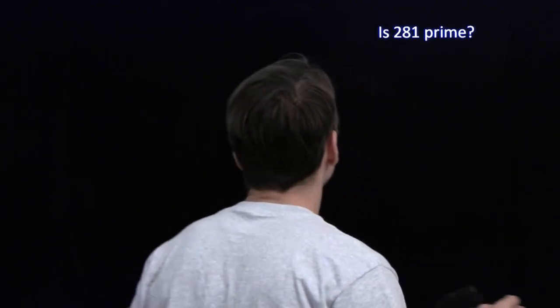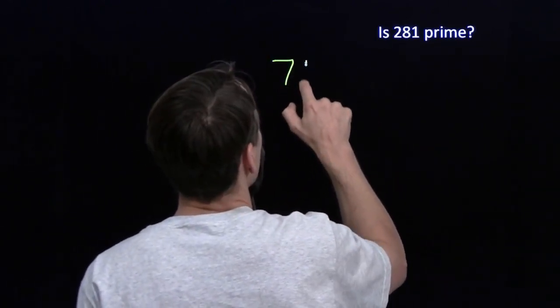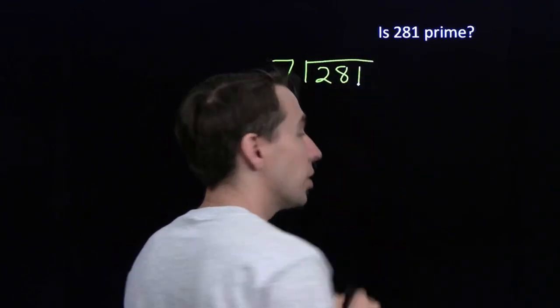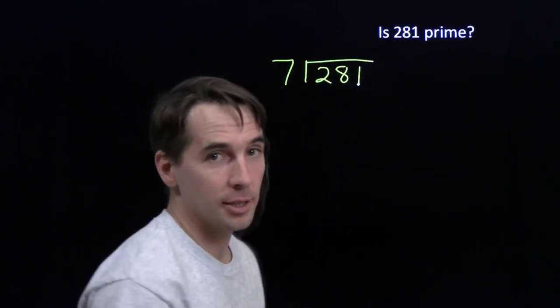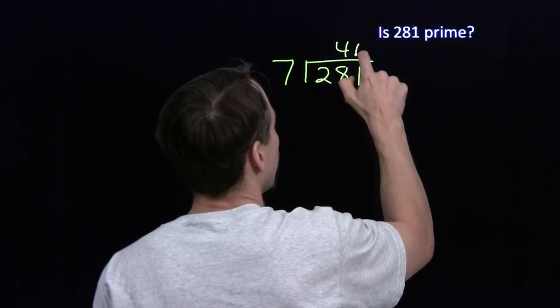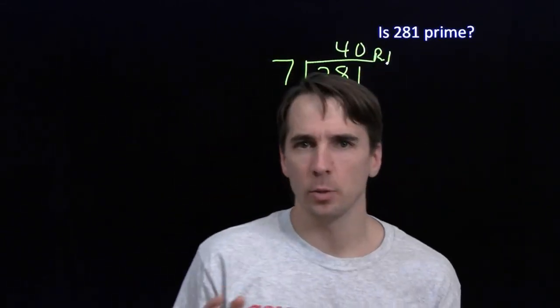We're on to 7. I don't have any slick tricks for 7, so we'll just do the division. 7 into 281 — well, 7 into 280 is 40, so we get 40 with a remainder of 1. So 7 doesn't work.